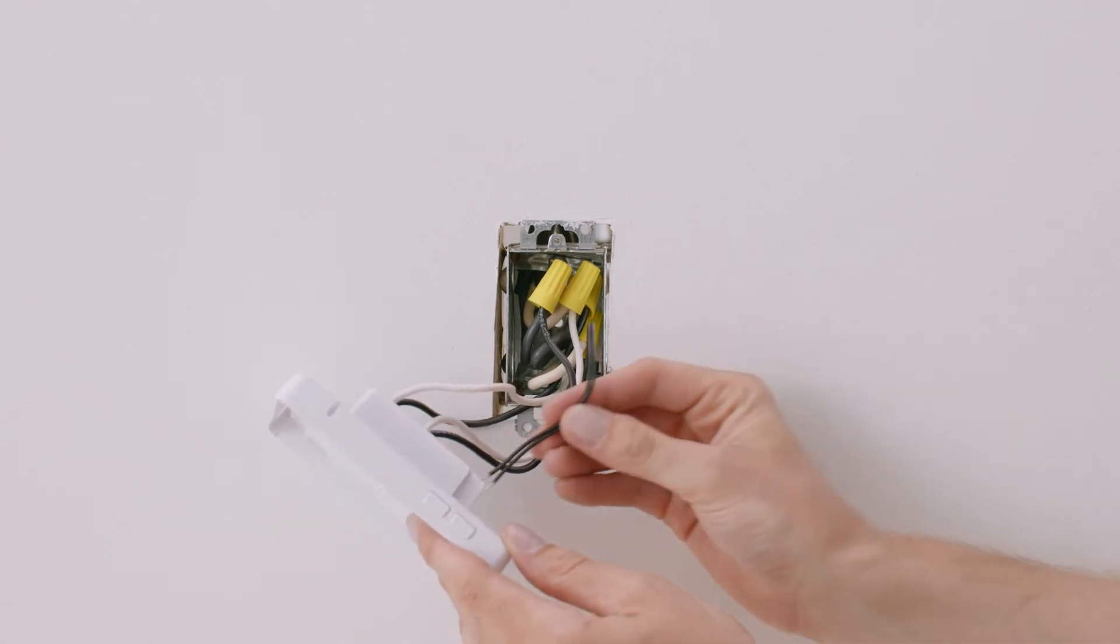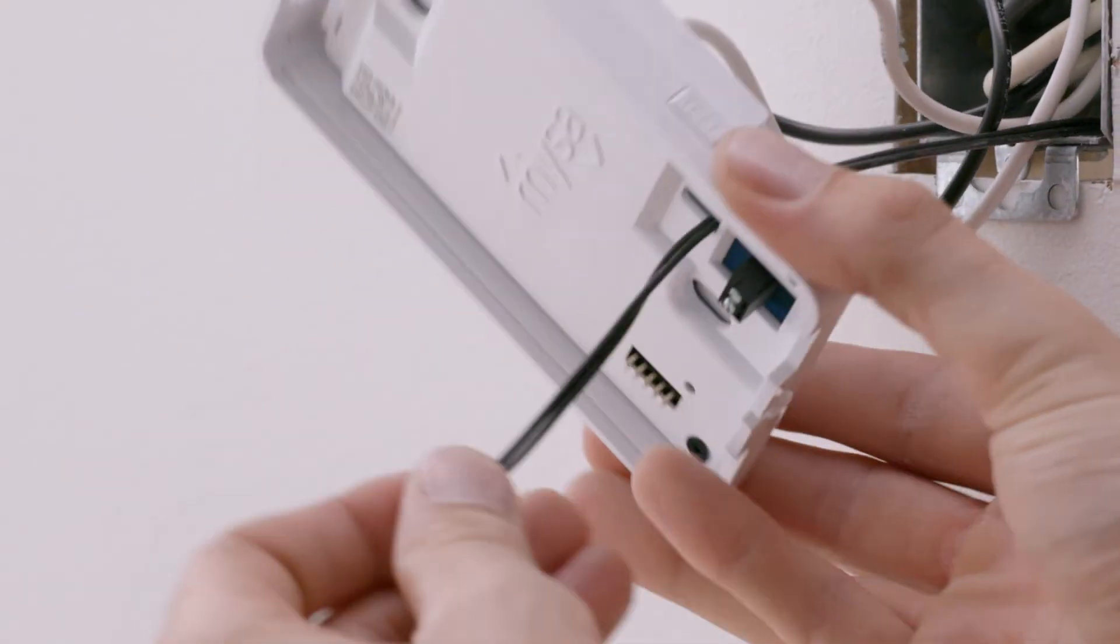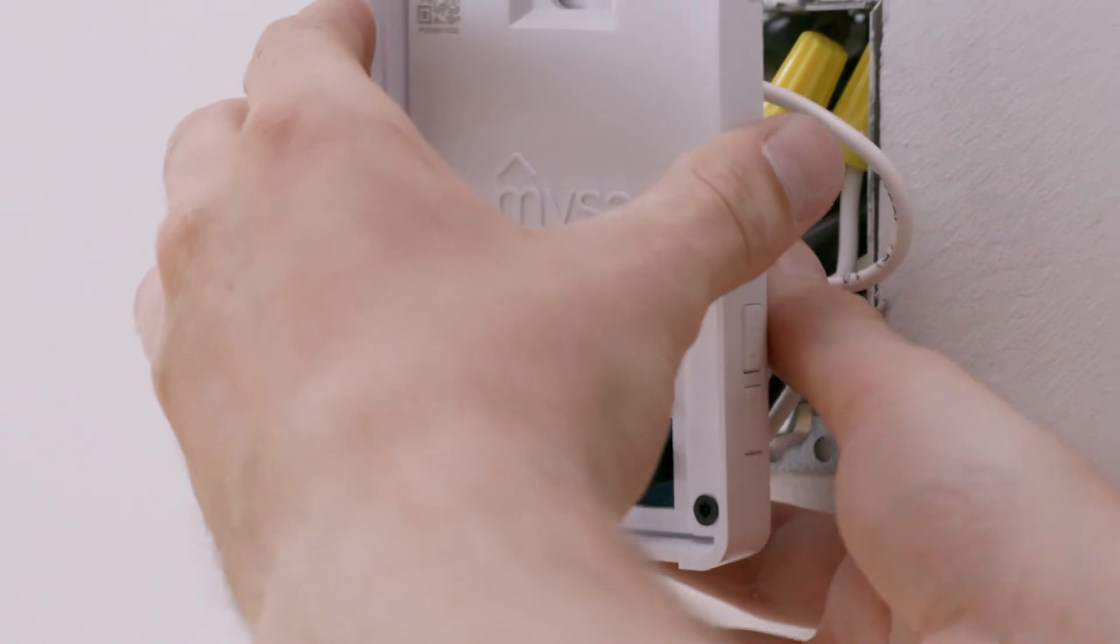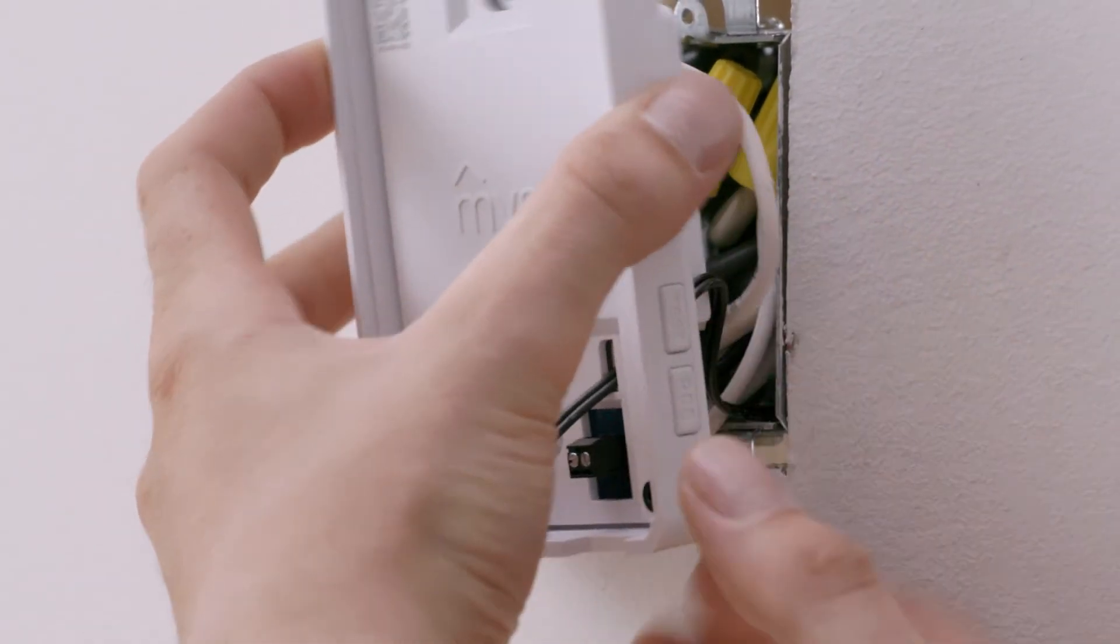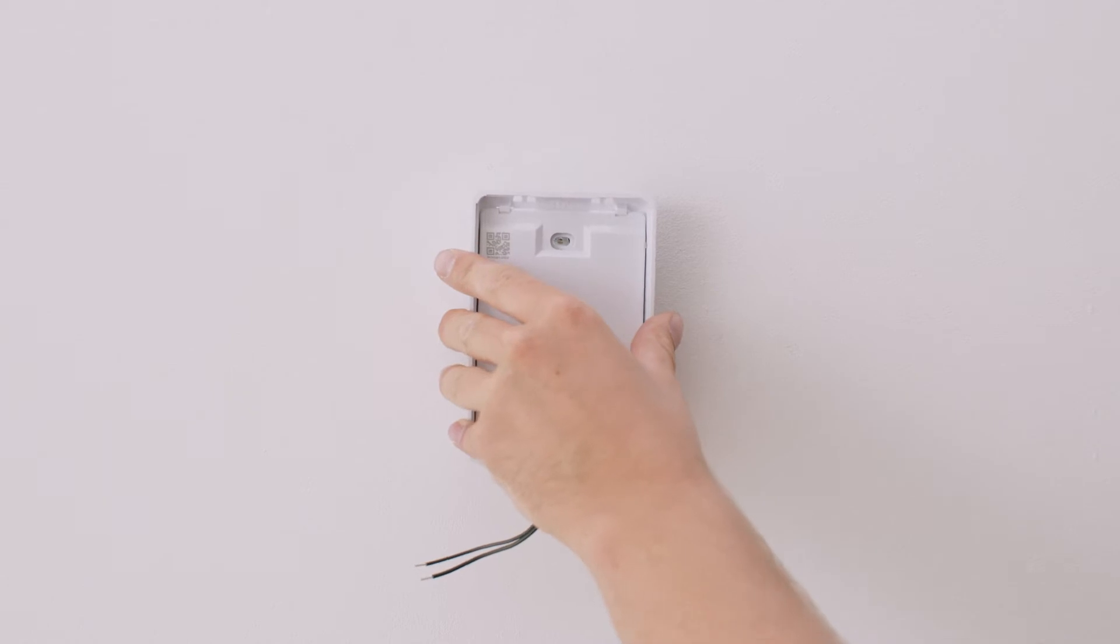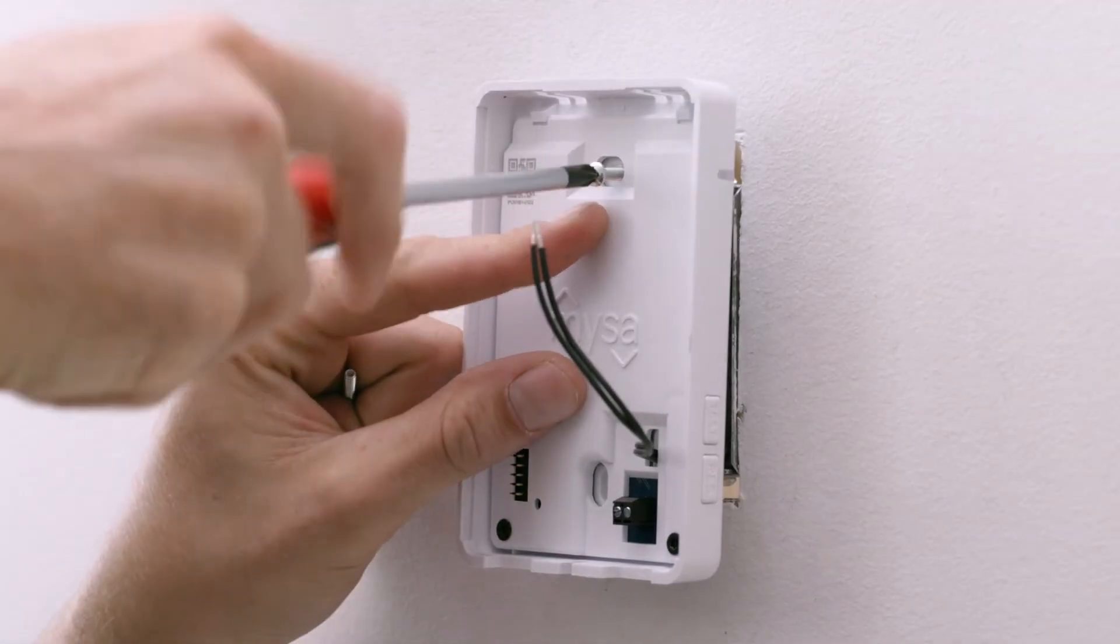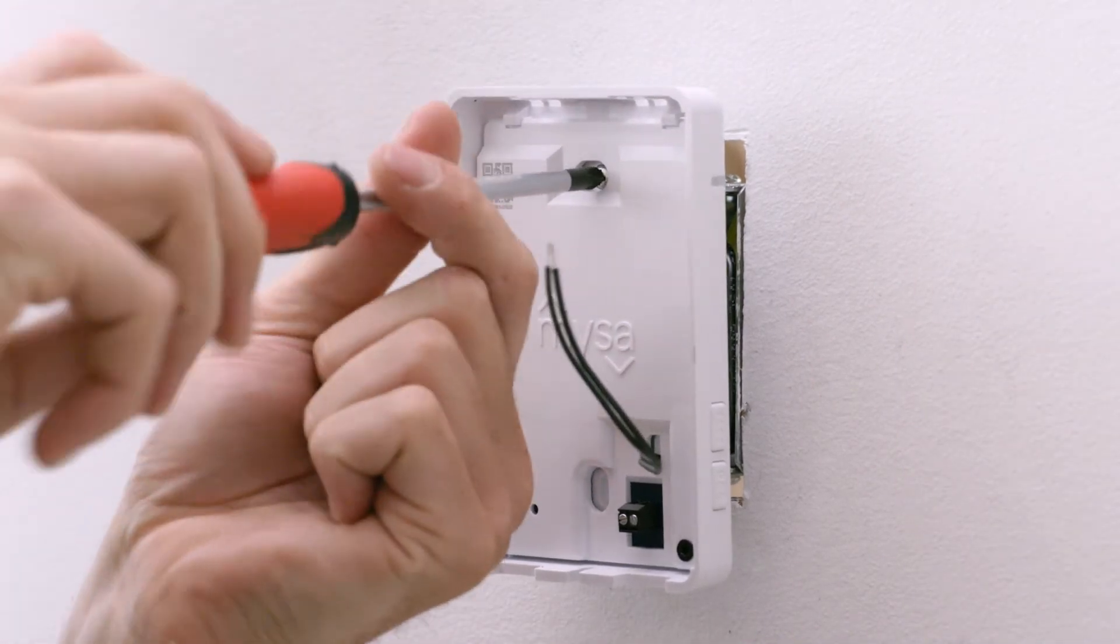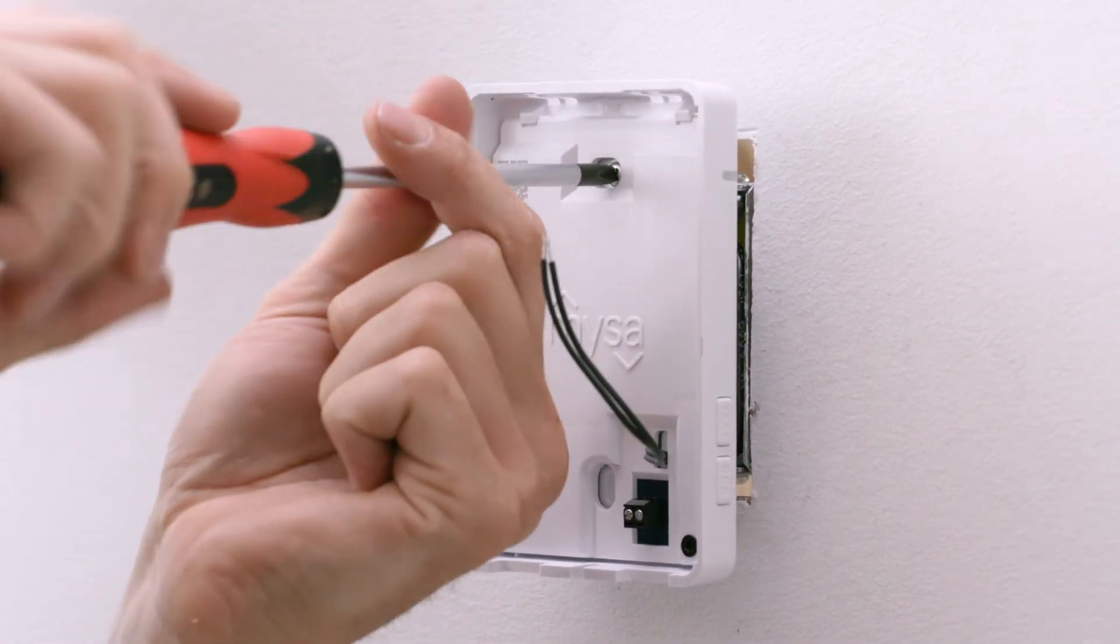Now, let's attach the floor sensor. We're going to pull the temperature sensor wires through the hole in the back of Mesa. Next, we're going to carefully place our wired Mesa into the gang box. Start with the wires and be gentle. You don't want to loosen any wire nut connections. Loose connections can lead to problems like error codes.